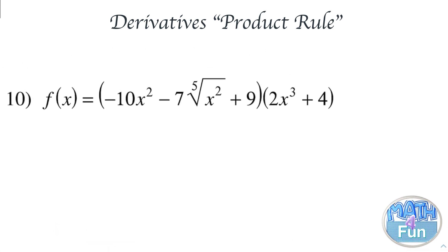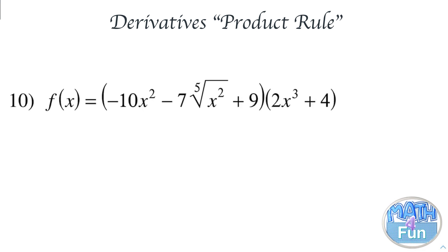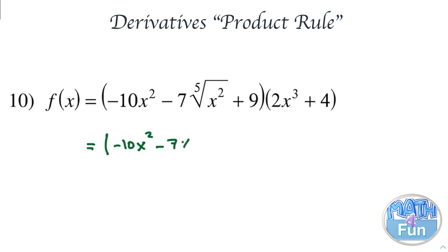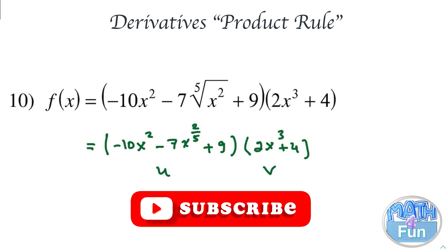Let's check another example: f of x equal to minus 10x squared minus 7, times the fifth root of x squared plus 9, times 2x cubed plus 4. Before applying the product rule, it's better to prepare the function by removing radical signs. We rewrite the fifth root of x squared as x to the power 2 over 5 in exponent form. So f of x equals minus 10x squared minus 7 times x to the power 2 over 5 plus 9, times 2x to the power 3 plus 4. You can then define u and v, find u prime and v prime, and apply u prime v plus v prime u to get the answer.